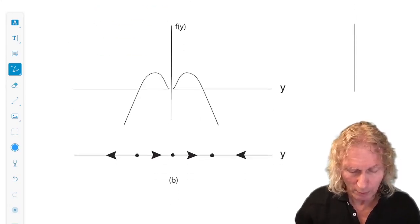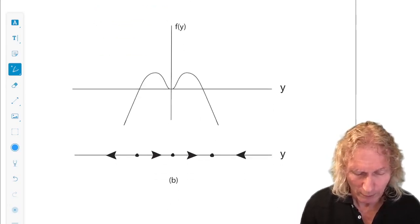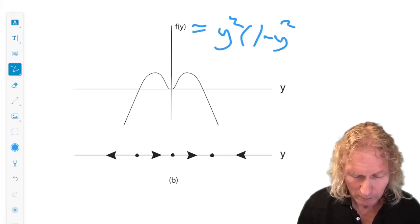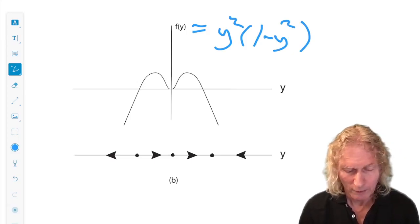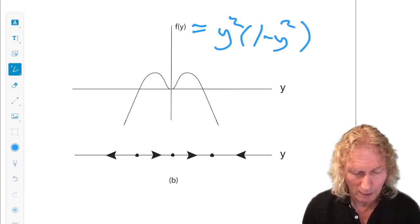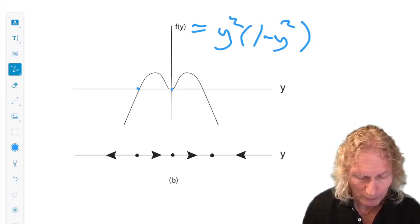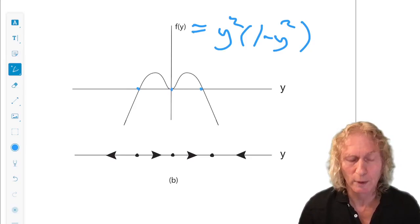The y component, well, if we plot f of y, which remember was y squared 1 minus y squared, that's what the graph is here.